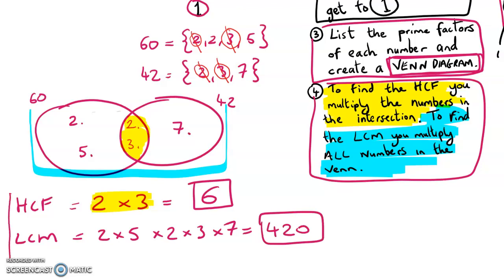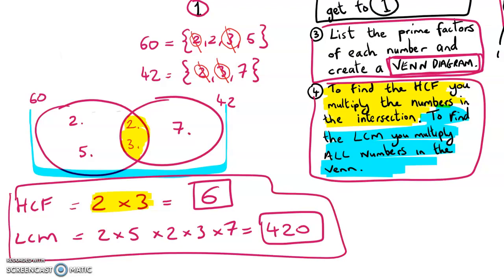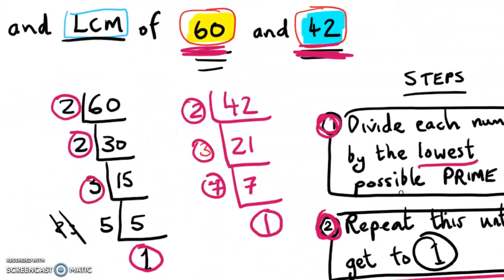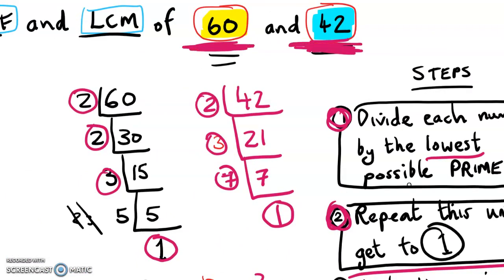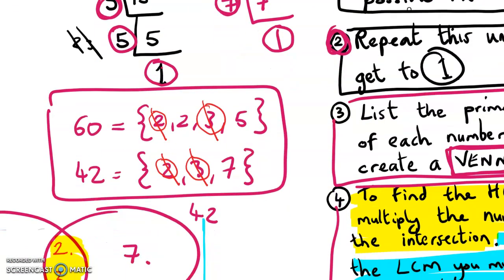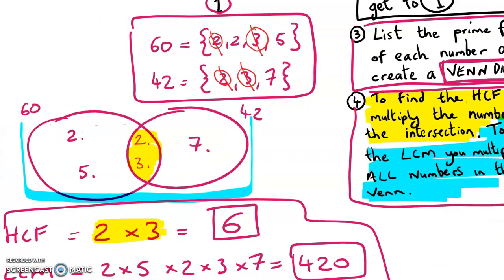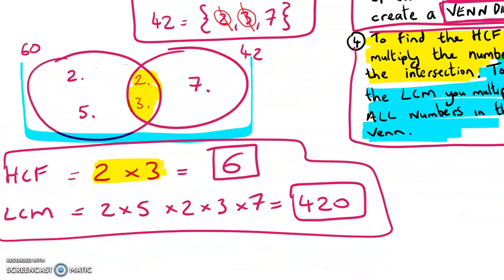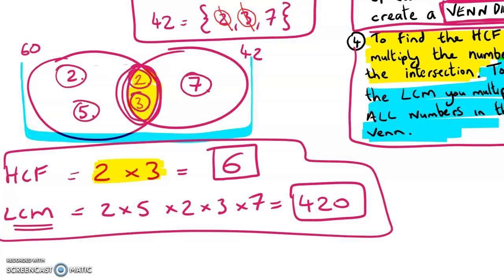So that is the method to find HCF and LCM. Let's just recap. First, you get your numbers given in the question — in this case 60 and 42 — and you divide each one by the lowest possible prime until you get to 1. You do the same for the other number. Then you list those elements as if you were making up a Venn diagram. Then you make the Venn diagram. To find the highest common factor, you multiply the numbers in the intersection. To find the lowest common multiple, you multiply all the numbers by each other. That's how you do highest common factor and lowest common multiple using prime factors.